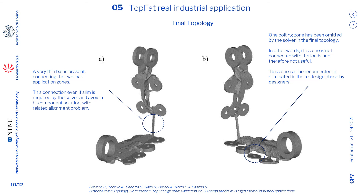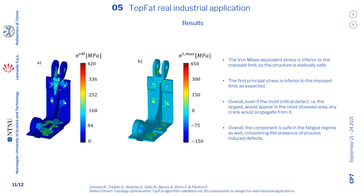Here, the final topology is reported. A very thin bar is present connecting the two load application zones. This connection, even if slim, is required by the solver and avoids a component-separated solution. Without this bar, a connection would be included anyway; otherwise, alignment problems may appear during component allocation in the vehicle. Secondly, one riveting zone has been omitted by the solver in the final topology — this zone is not connected with the rest of the component and is not subjected to any stress. The reason is that this part is less important, and the solver decides to exclude it to put the mass in other more functional zones. However, this zone can be reconnected or eliminated manually by designers in a following phase.